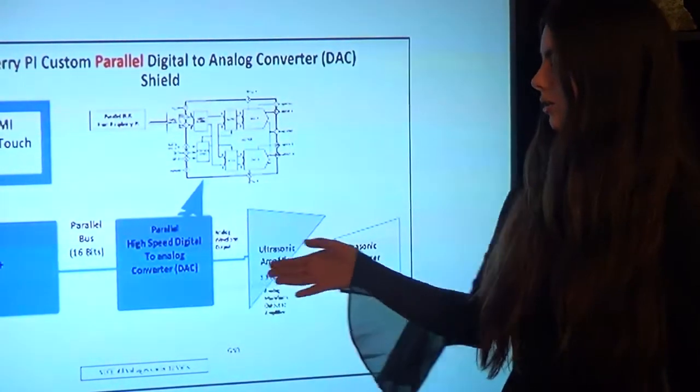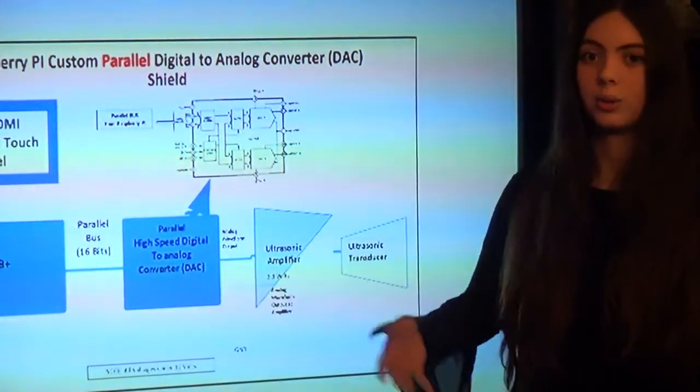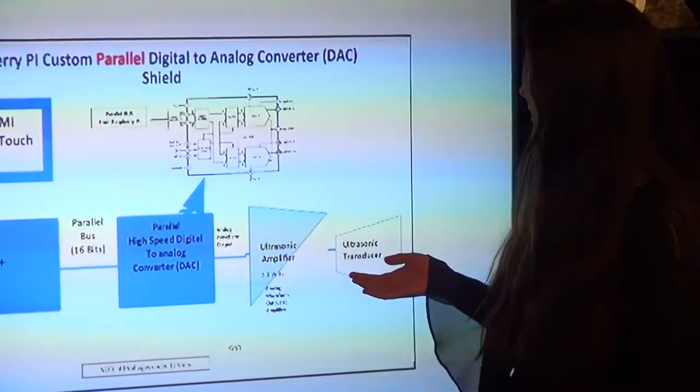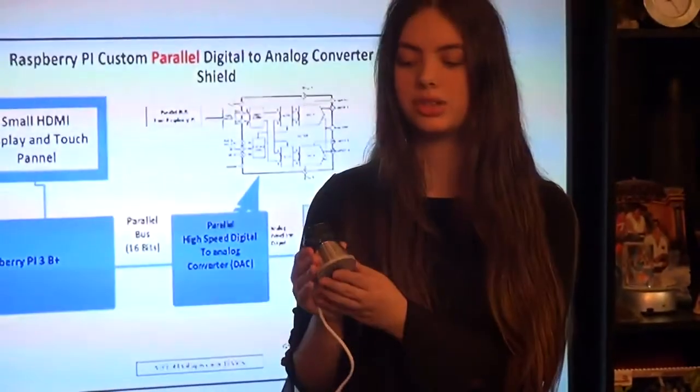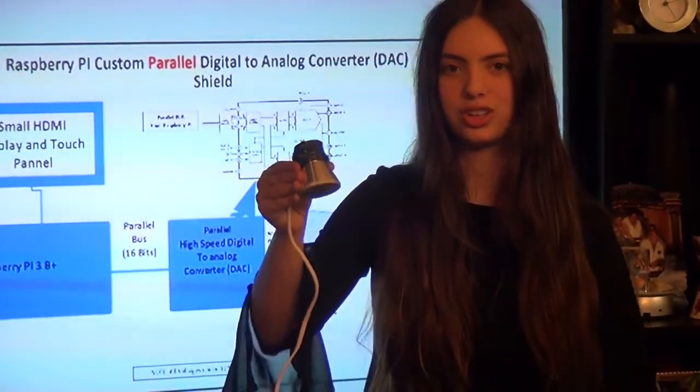Now, from there the information goes to the ultrasonic amplifier where it is amplified and then to the ultrasonic transducer which is then emitted at the ultrasonic frequency range. This is the ultrasonic transducer.